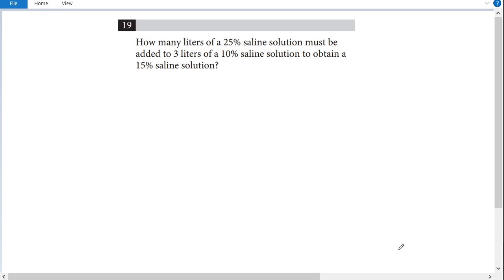Hello everyone. Today we're going to be looking at this SAT word problem. So what do we have? How many liters of a 25% saline solution must be added to 3 liters of a 10% saline solution to obtain a 15% saline solution?